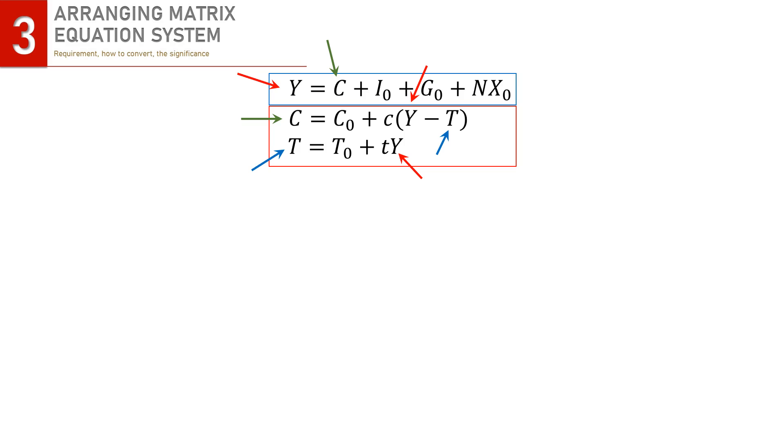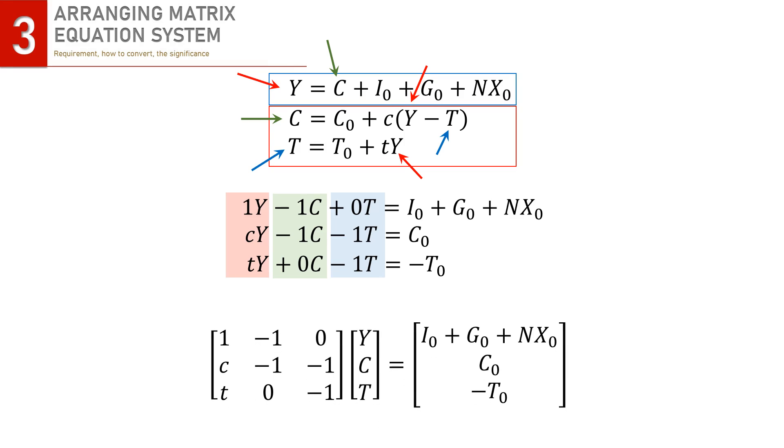Rearrange the equation system a little bit, we can get this. Now, all the endogenous variables are collected on the left with their coefficients. We have all exogenous variables on the right. And then, here we go, the matrix equation system.